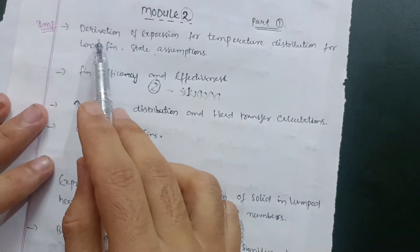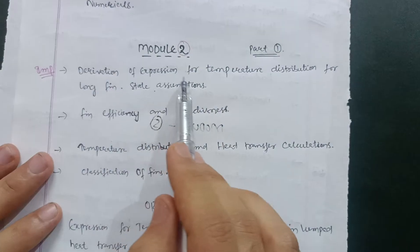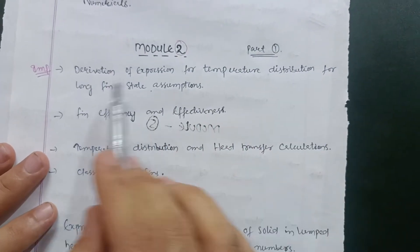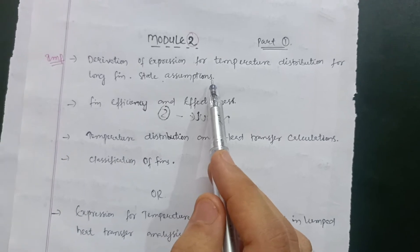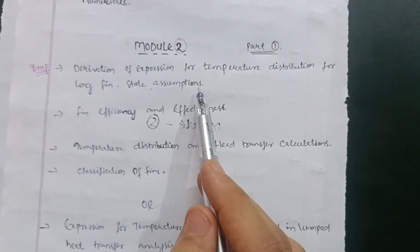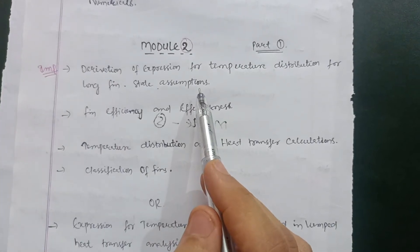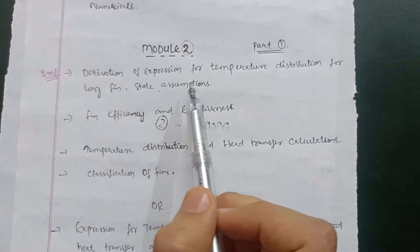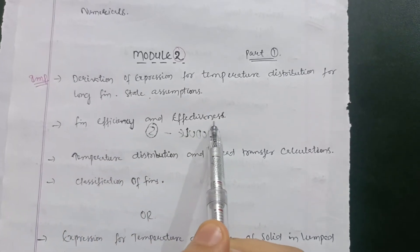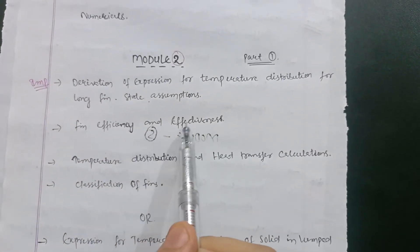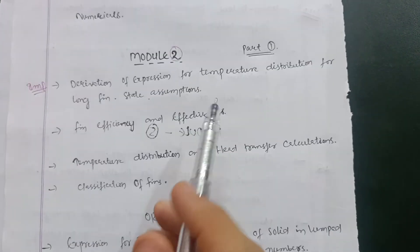Then Module 2 comes. The most important question in Module 2 is the derivation of the expression for temperature distribution for a long fin with assumptions — it has been asked in two or three VTU examination papers, so it is a highly probable question. Then go for fin efficiency and effectiveness: the theory, derivation, and the significance of fin efficiency and effectiveness.